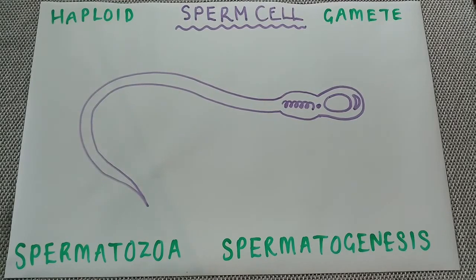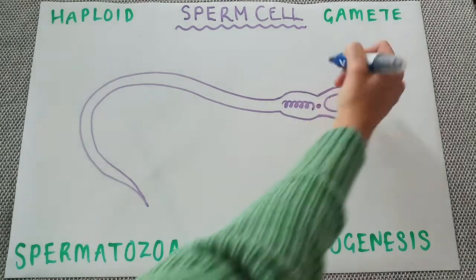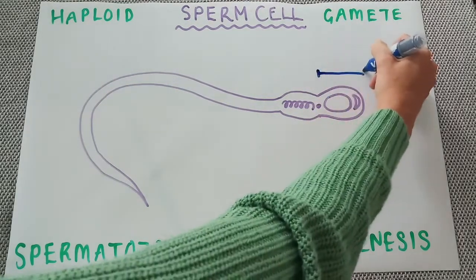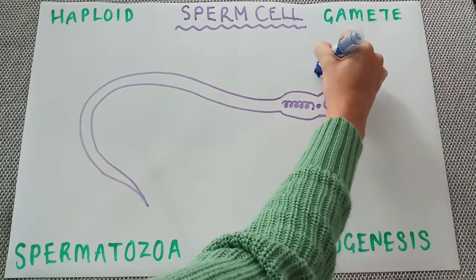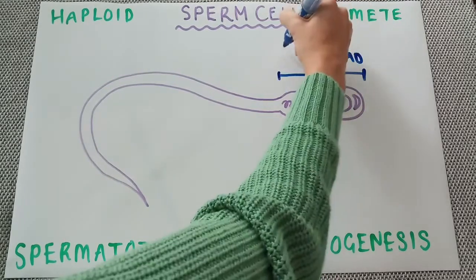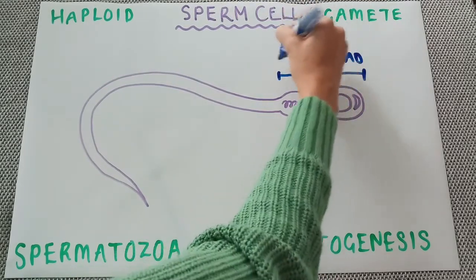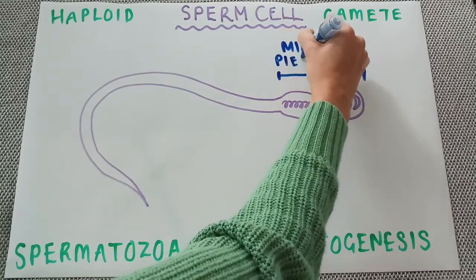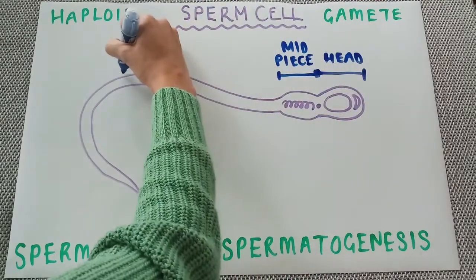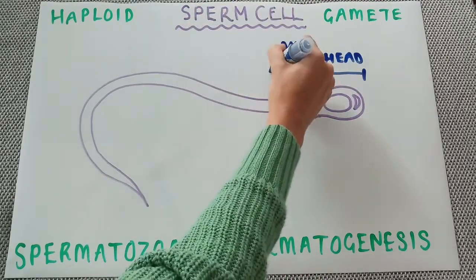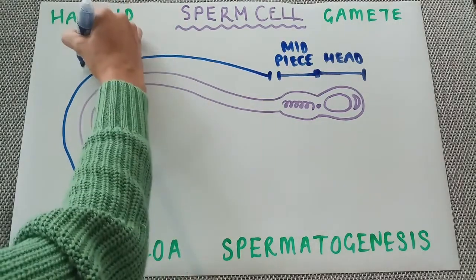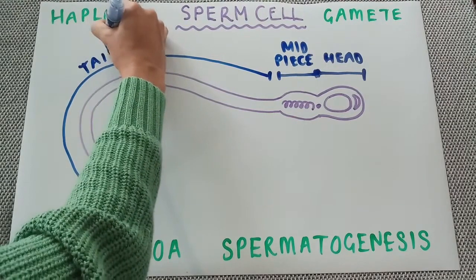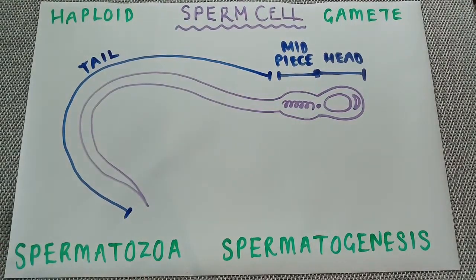The sperm cell is divided into three main sections. At the front we have the head, the central section is the mid piece, and then at the end this final section is the tail. Within each of those sections there are some key points that you'd need to know about.